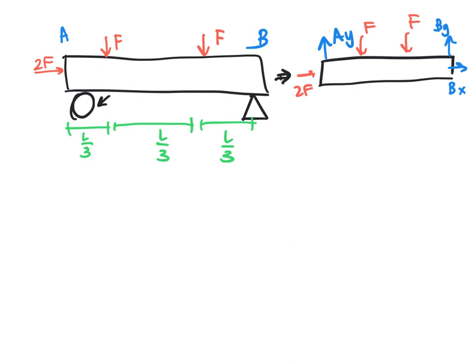So now we're going to find our equilibrium equations like usual. We know that forces in the x direction is going to be equal to 0, forces in the y direction is going to be equal to 0, and the moment, we're going to take the moment at A, is going to be equal to 0 as well. So we notice that the forces in the x direction, we have 2F going in the positive x direction, with Bx also going in the positive x direction.